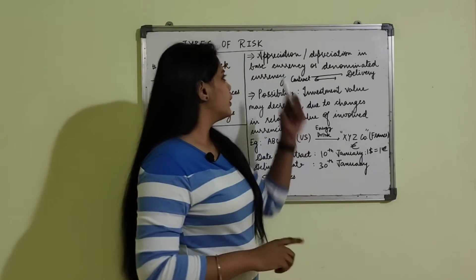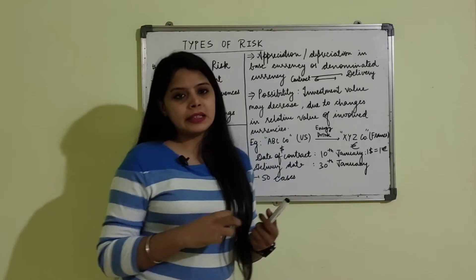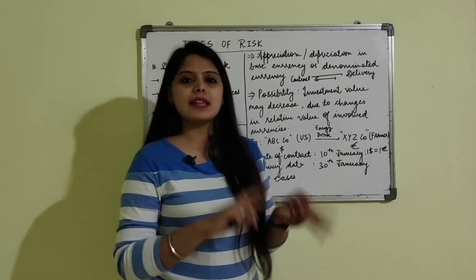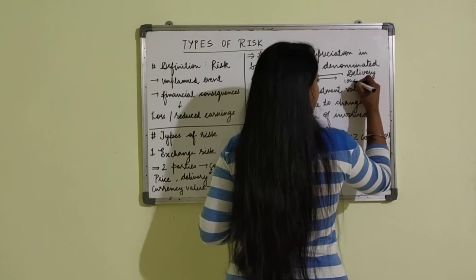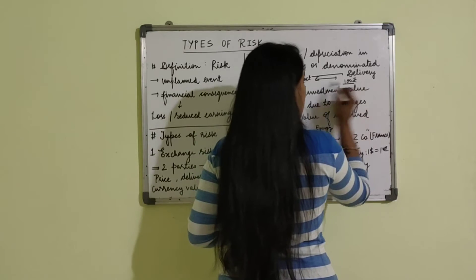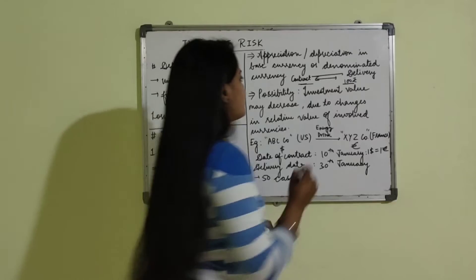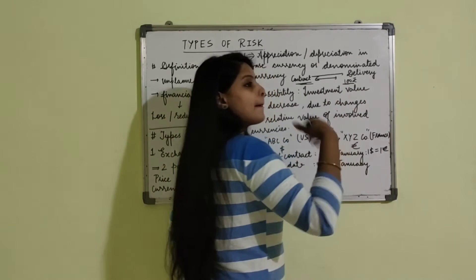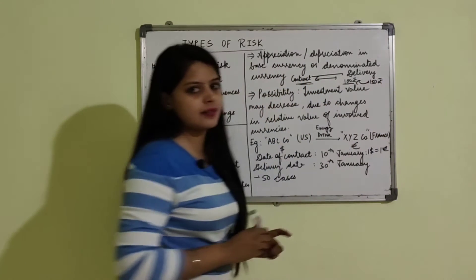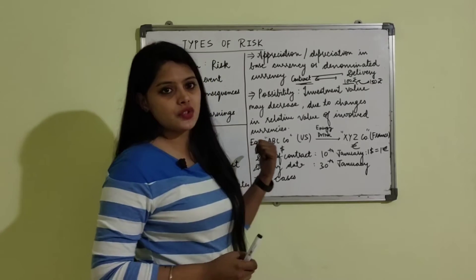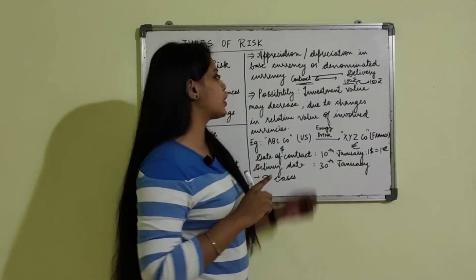Due to appreciation or depreciation, the cash inflows will change. For example, if the contract price is 100 rupees on the contract date but becomes 150 rupees on the delivery date, there is a change in the value of the currency due to the rate of exchange. Because there are two currencies involved in the transaction, if there is market fluctuation in the currencies, the transaction amount will fluctuate and there will be a change in the value of the transaction.